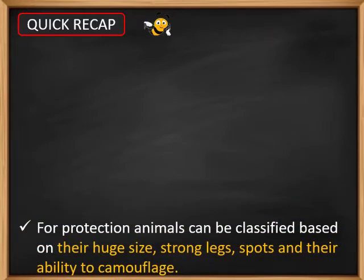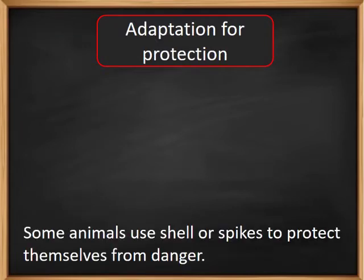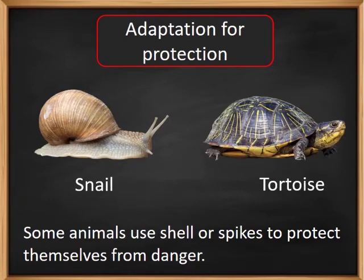For protection, animals can be classified based on their huge size, strong legs, and their ability to camouflage. Some animals use shells or spikes to protect themselves from danger. For example, snails have a covering and hide inside that shell when they sense danger. Tortoise also hides its legs inside the hard covering to protect itself from enemies.